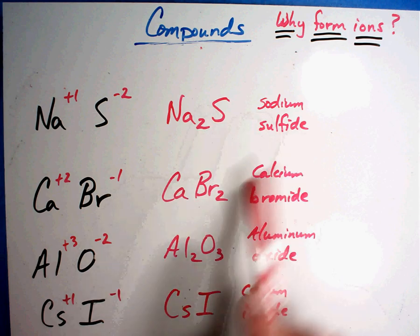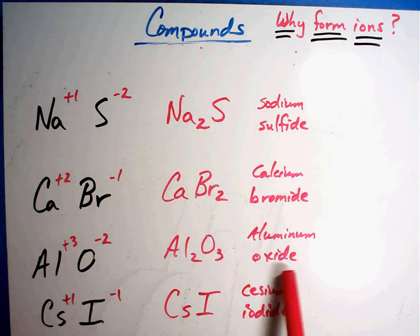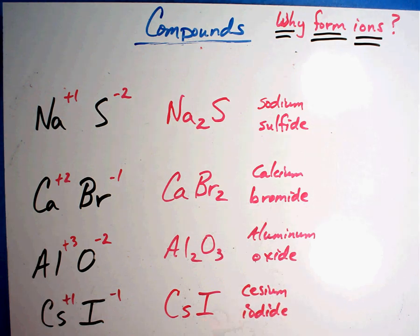Sulfur became sulfide, bromine became bromide, oxygen became oxide, iodine became iodide. Some of them had one number, some had two numbers, and some had none.